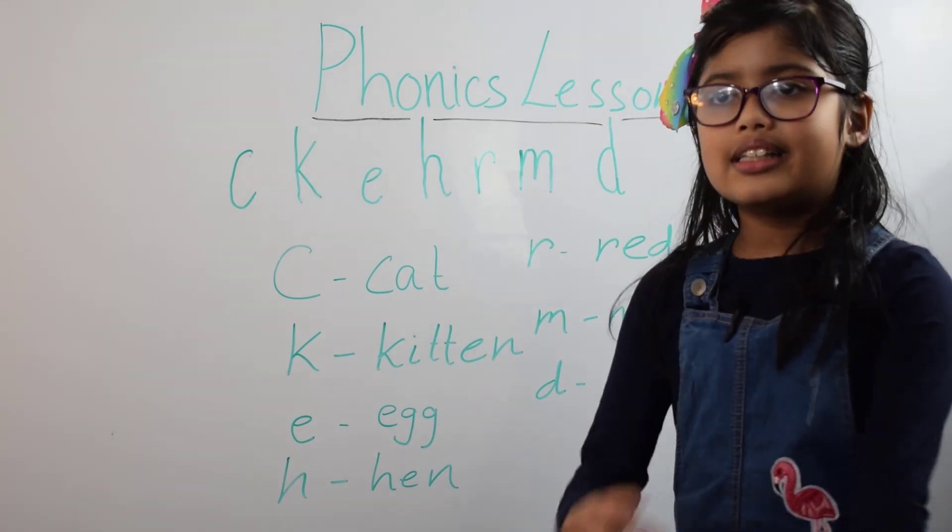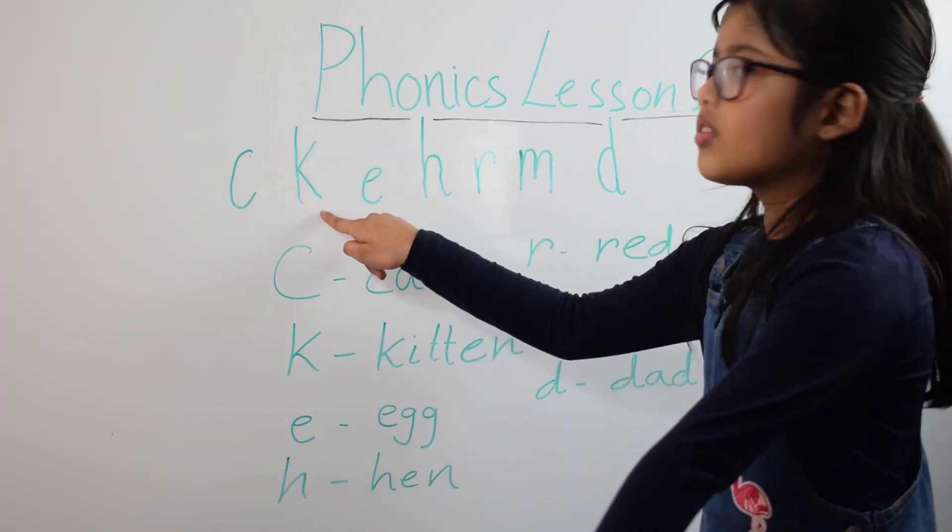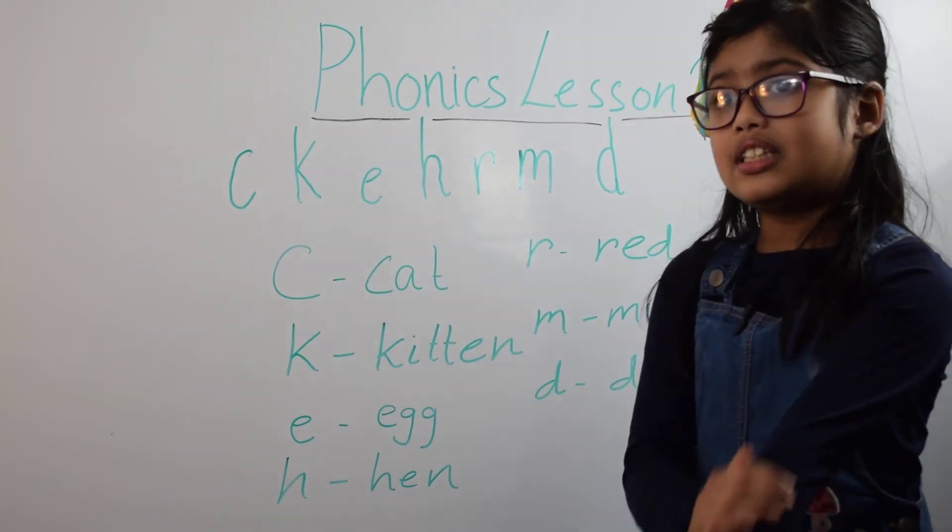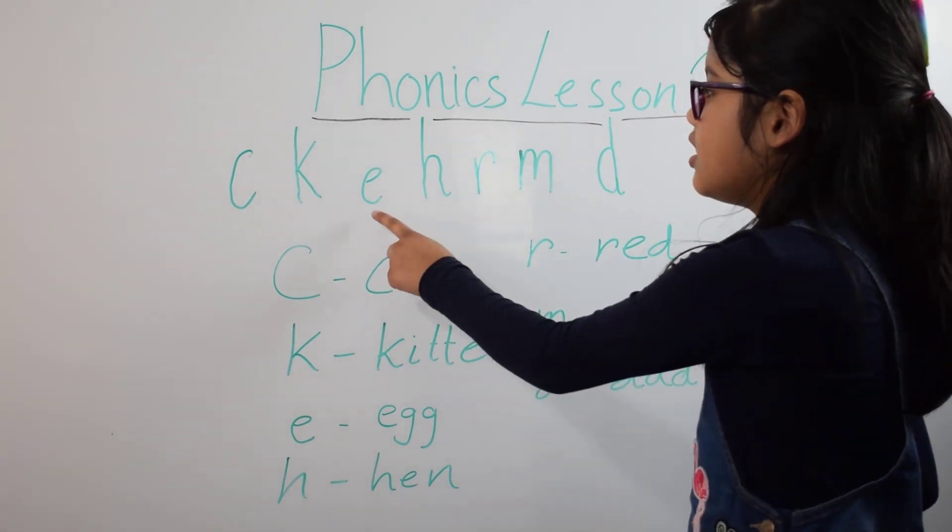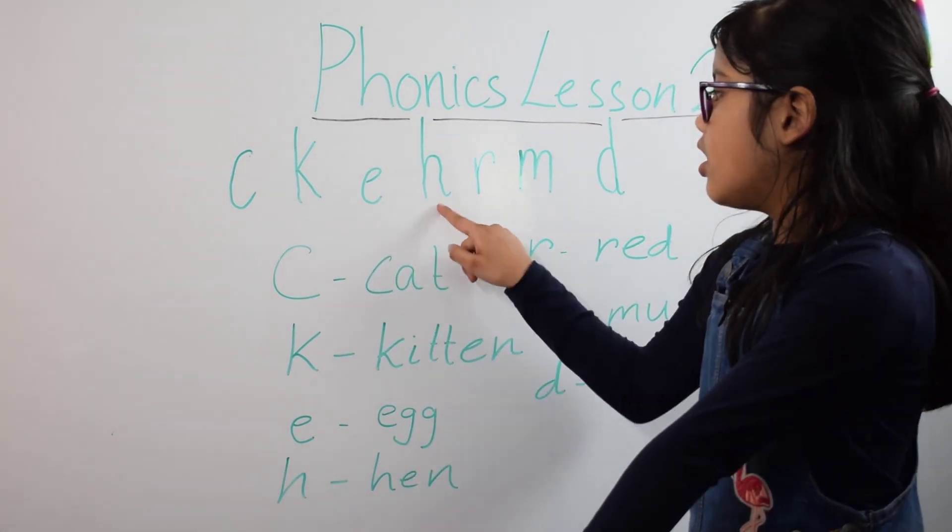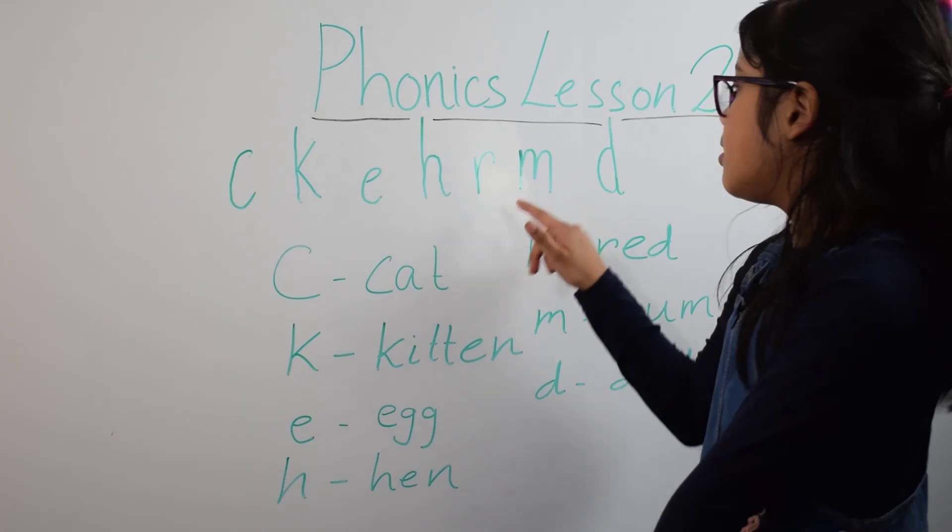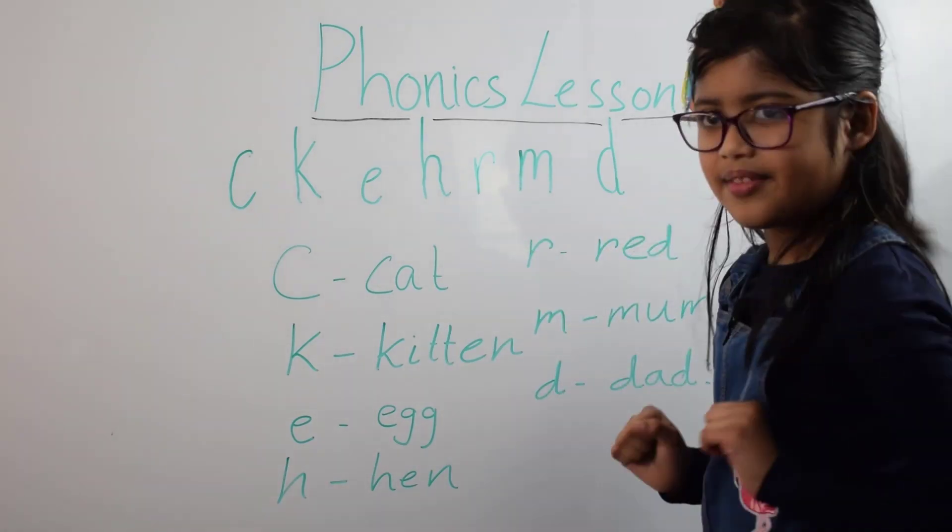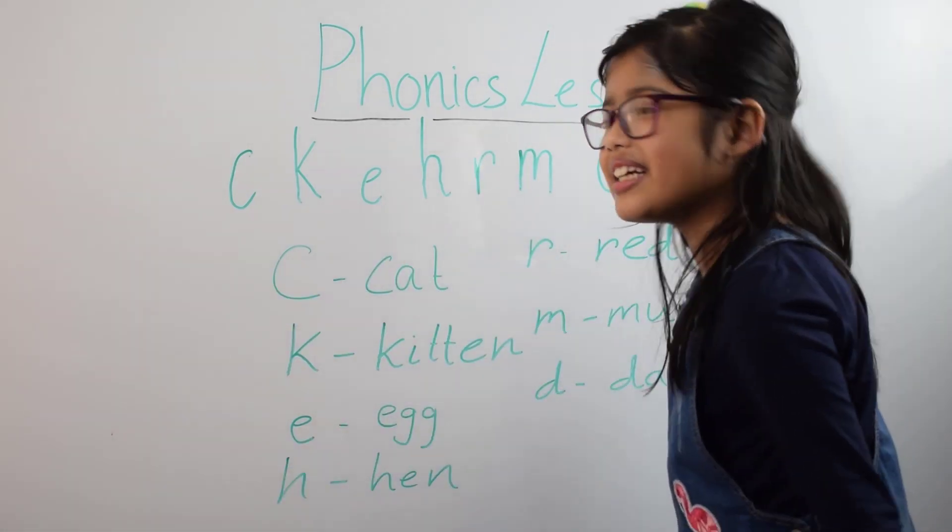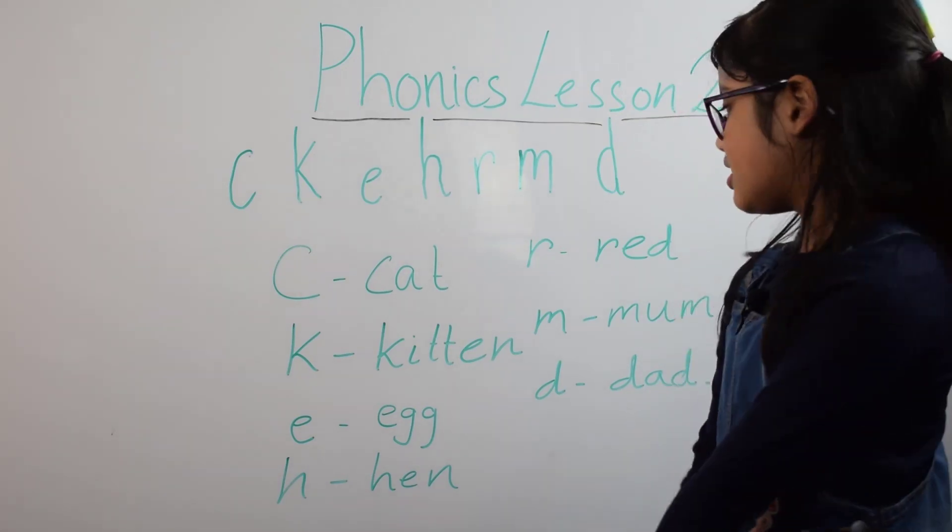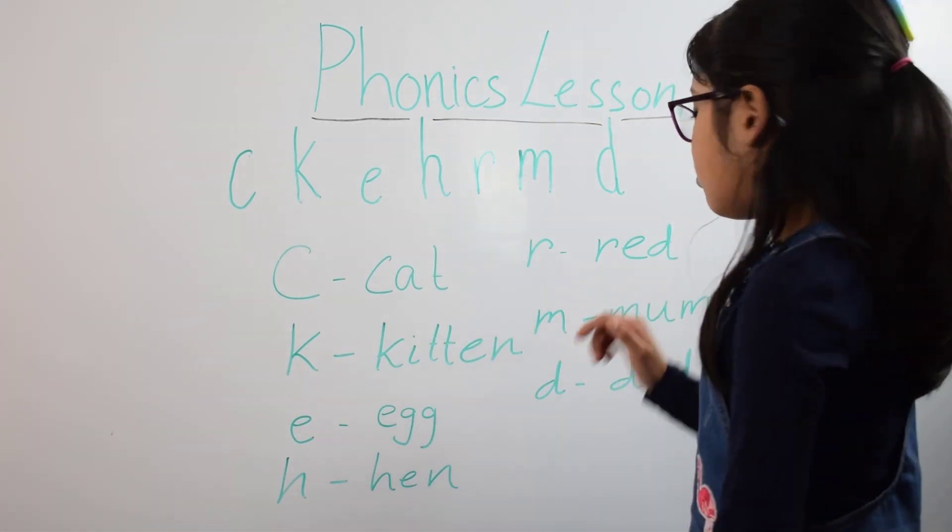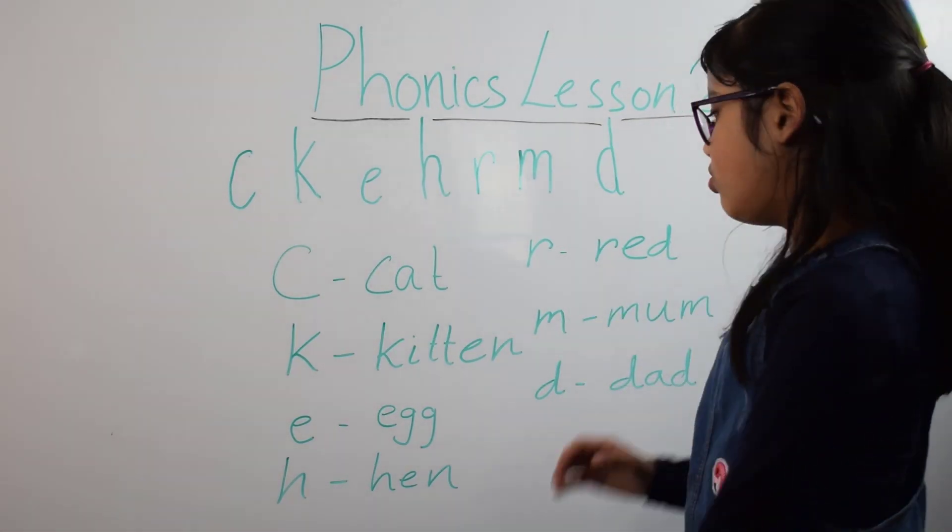Let's go over again. The words we're working with are C and another K, but they're different pronunciations, E, H, R, M, and D. Sound out with me: K-A-T cat, R-E-D red.